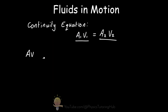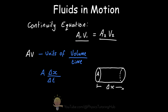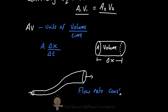It's also important to notice that the product AV has units of volume per unit time, because velocity is distance per unit time and the cross-sectional area multiplied by that change in distance gives a volume. We call this the flow rate. So the continuity equation states that no matter where the water is along a pipe of varying diameter, the flow rate remains constant for an ideal fluid.